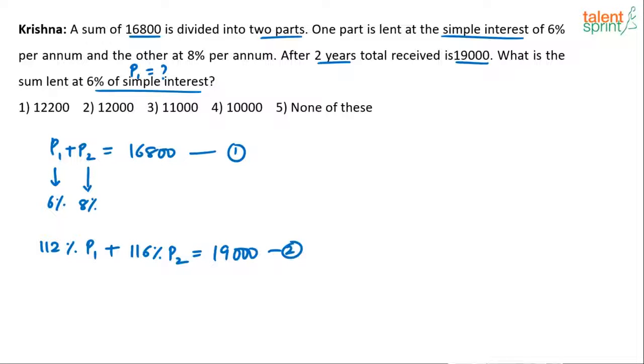Since we need to find P1, the sum lent at 6% simple interest, we can say P2 equals 16,800 minus P1 and substitute that into the second equation.